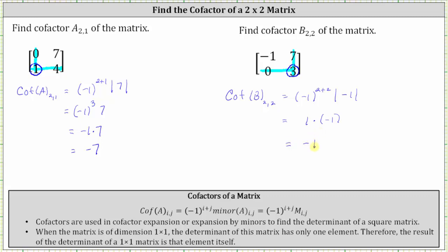So again, don't confuse the notation of vertical bars with absolute value here. It does represent the determinant of, in this case, a one by one matrix. I hope you found this helpful.